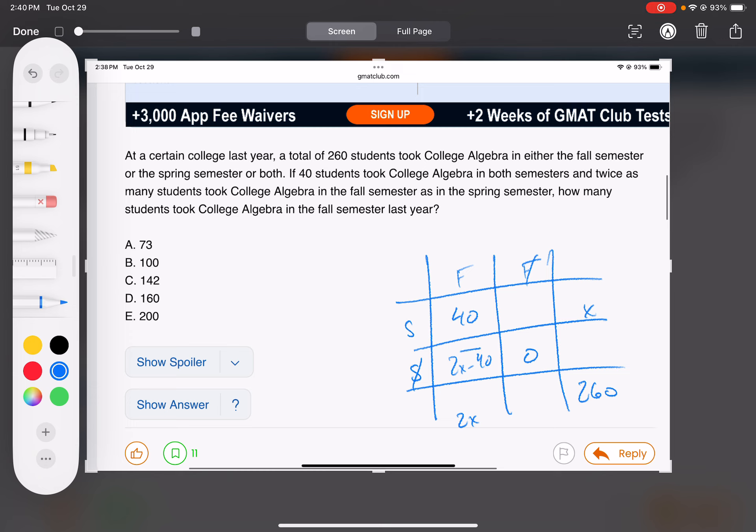So this is 2x minus 40. And then I'm going to add this row, this plus this. 2x minus 40 plus zero is just 2x minus 40.